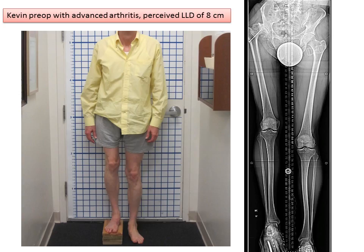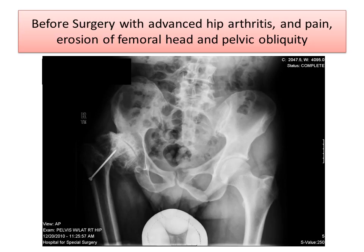I'd like to show you another case to illustrate this concept. Kevin, before surgery, had advanced arthritis and a perceived leg length discrepancy of 8 centimeters. Notice the tilt of the pelvis on the long x-ray. Before surgery he had advanced arthritis, pain, erosion of the femoral head, and pelvic obliquity.